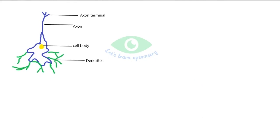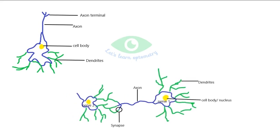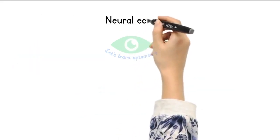Here is a nerve cell diagram. The axons of nerve cell 1, shown in blue, connect with the dendrites of nerve cell 2, shown in green, and that junction is called the synapse.